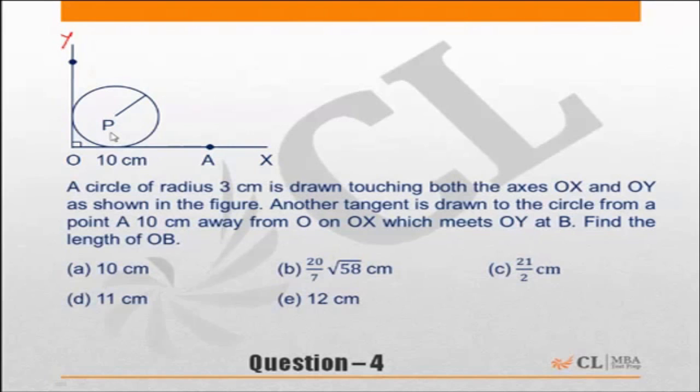A tangent is drawn to the circle from point A, 10 centimeters away from O on OX, which meets OY at B. Okay, this means this may be the case: this tangent from A meets OY at B.